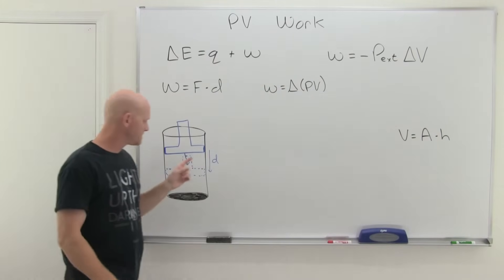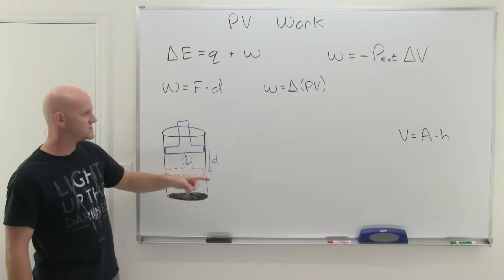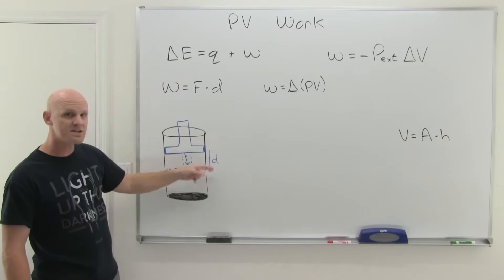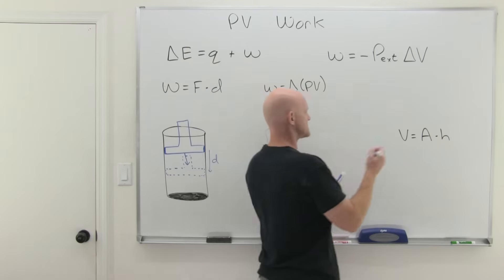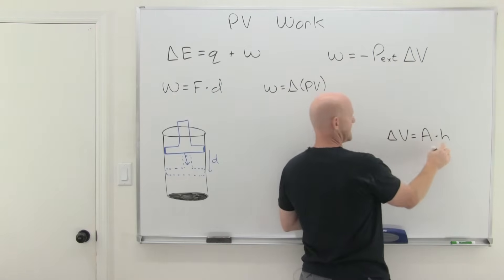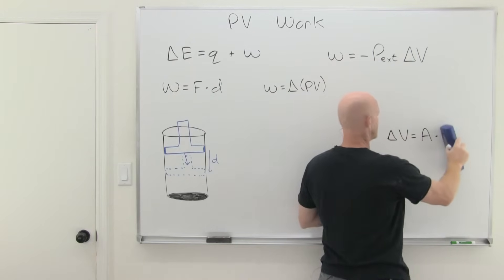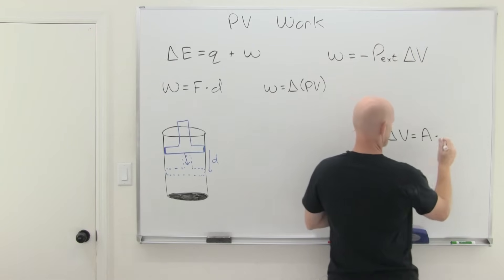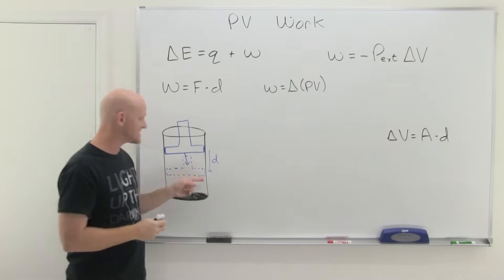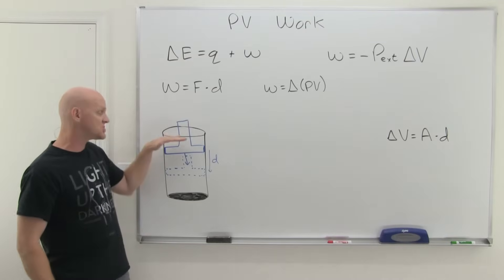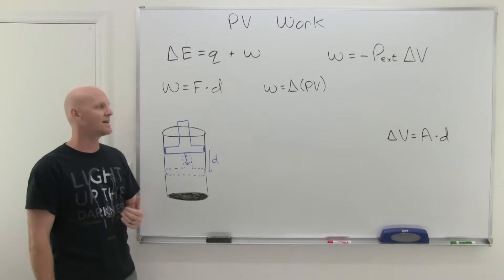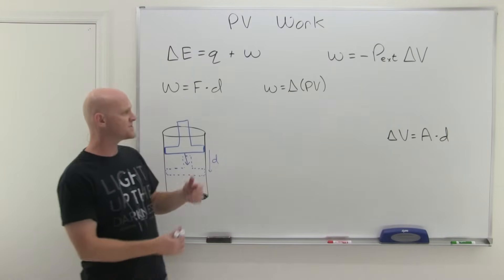And what's nice, though, is that in this case, the delta V is related to the change in displacement. So I'm going to make this a delta V, and then instead of the height here, I'm going to make it d, the displacement, because that is the height. So that corresponds to the change in volume of that gas.